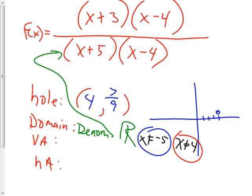So the hole was this one — the one at 4. If this one's the hole, then this one must be the vertical asymptote. So that's at x equals negative 5. That means there's a line right there at negative 5 — that's a vertical asymptote.